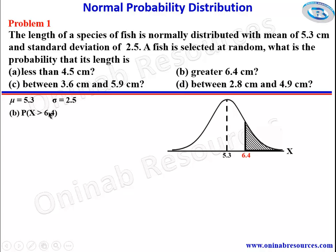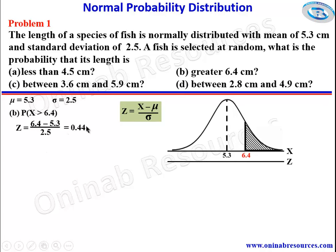Before that, we convert to z-score. Maintaining our formula, z = (6.4 − 5.3) / 2.5, which gives 0.44. Representing it on the z-axis, the mean is 0 and here is 0.44. So the probability of x greater than 6.4 is equal to the probability of z greater than 0.44.